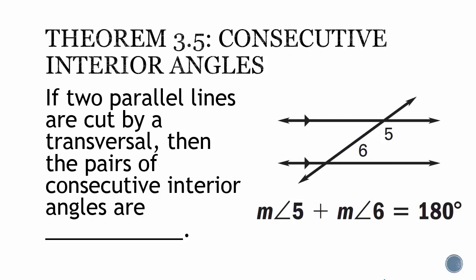Theorem 3.5, consecutive interior angles. If two parallel lines are cut by a transversal, then the pair of consecutive interior angles are supplementary, meaning that if the two angles are on the same side of the transversal and inside the parallel lines, then angle 5 and angle 6 add up to 180 degrees because they are supplementary.